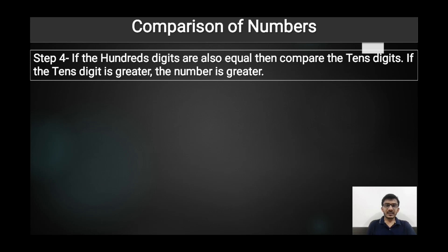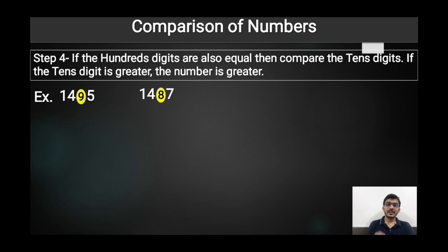Step four: if the hundreds digits are also equal, we compare the place value of tens. In the example, the thousands place and hundreds place are equal in both numbers, so we compare the tens place. In the first number the place value of tens is 90, and in the second it is 80. Since 90 is greater than 80, we write that 1495 is greater than 1487.